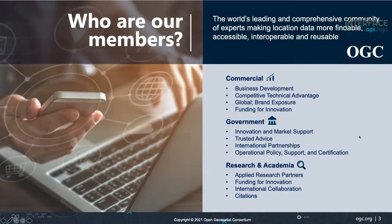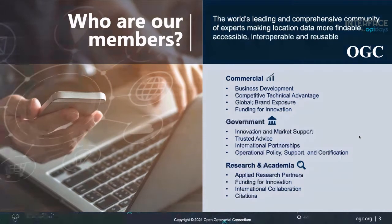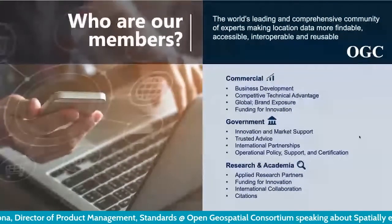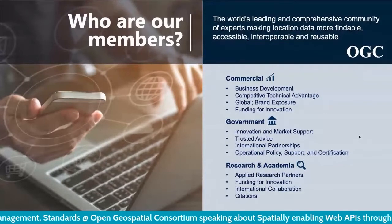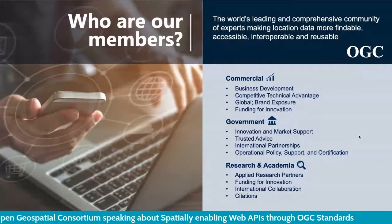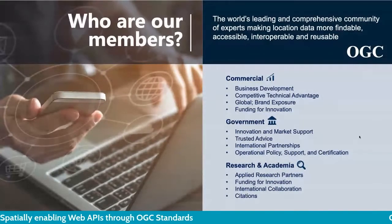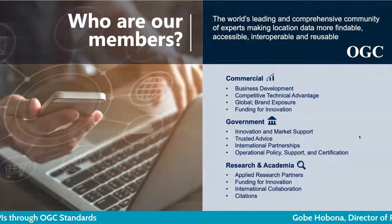OGC offers a neutral and trusted forum for tackling interoperability issues within and across communities, not just within the geospatial domain, but in any community that makes use of location-referenced information. We have more than 500 member organizations from the commercial and government sectors. Those organizations join the OGC for a variety of reasons — for business development, to expand the brand globally. Government departments join to support operational policy development and expand international partnerships. Research and academic organizations join to expand international collaborations and help identify opportunities for innovation funding.